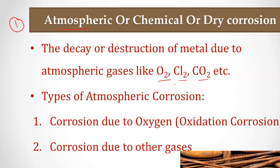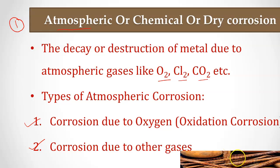There are two types of atmospheric corrosion. One is corrosion due to oxygen, also called oxidation corrosion. The other type is corrosion due to other gases, which is not included in the syllabus. The main focus is on corrosion due to oxygen. You can see a figure of steel iron rods where a yellowish-brown oxide layer forms on the surface — that is corrosion.